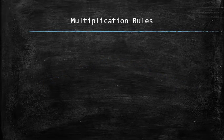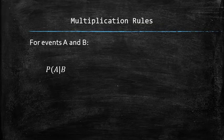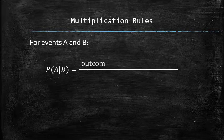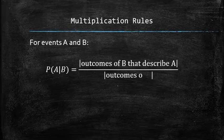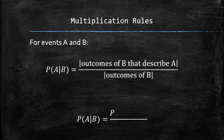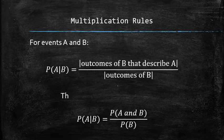First, let's formalize the approach for finding the conditional probability. For any two events A and B, the way we found the probability of A given B was to divide the number of outcomes in B that describe A by the number of outcomes in B. This process can be easily converted into the following formula, which we call the conditional probability formula.